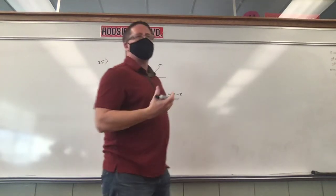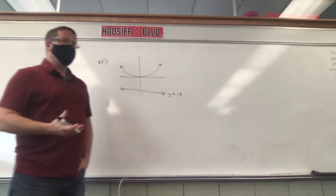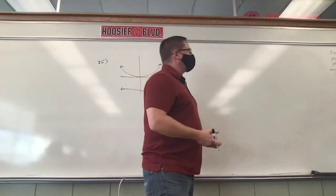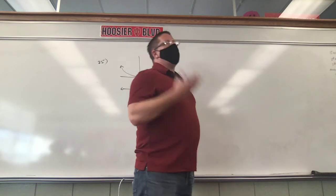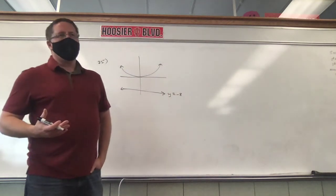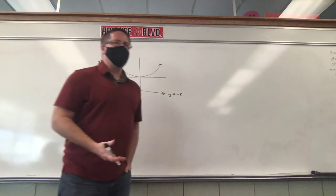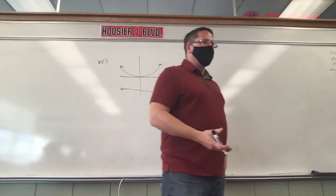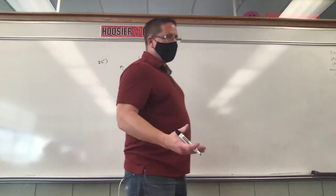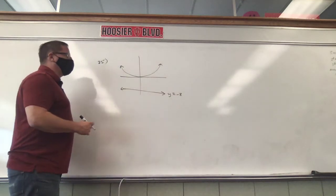I hate this because I tell students all the time — just because something looks a certain way doesn't make it so. It looks like it's 0, 0, but are we certain? No. But it's got to be, or we can't do the problem. So we're making the assumption — even though I tell you not to do that, we have to. We're assuming that the vertex is 0, 0. They really should label it vertex 0, 0.